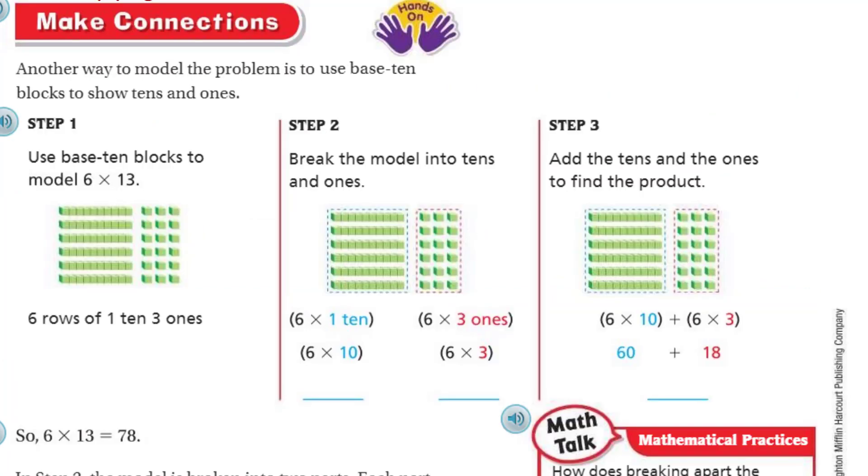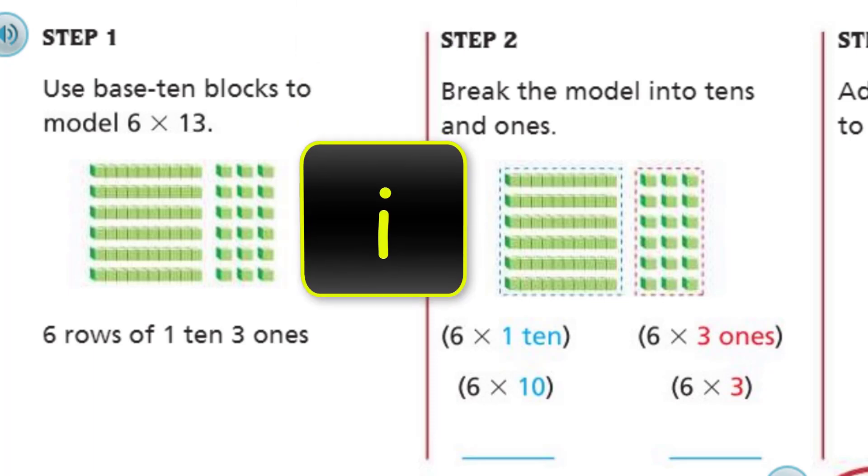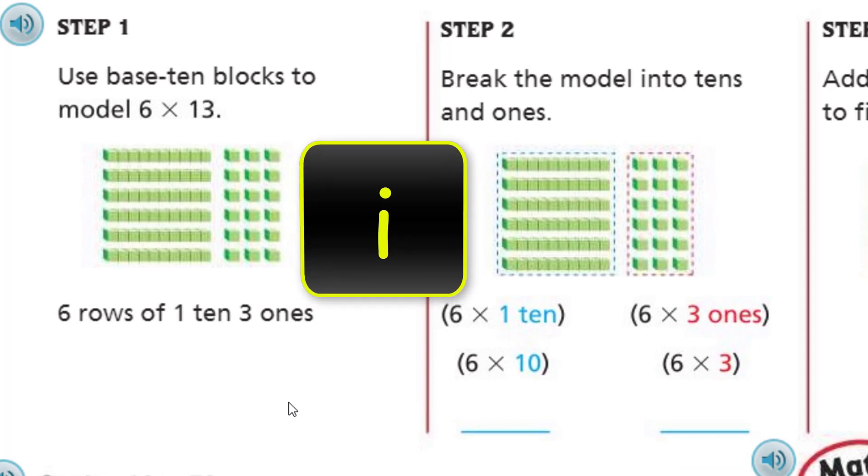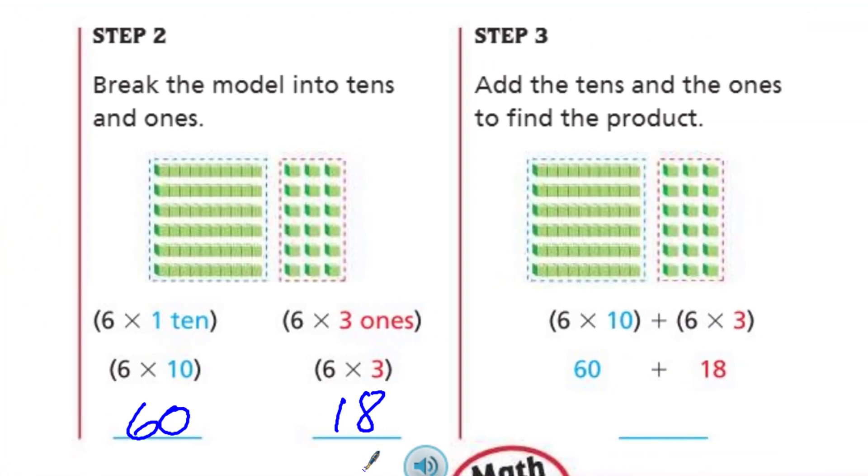Now it says we're going to make connections. There's another hands-on so you can get out your base 10 blocks. It says another way to model the problem is to use base 10 blocks to show 10s and 1s. Step 1, use base 10 blocks to model 6 times 13. And you can see we have 6 groups of 13. 6 rows of 1 ten and 3 ones. You see that? So 6 rows of 1 ten and 3 ones. You can see there's 6 rows, 1, 2, 3, 4, 5, 6 of 13. Step 2 says break the model into 10s and 1s. Here it's showing you 6 times 1 ten. And so then that would be 6 times 10, which here we have 60. Here we have 6 groups of 3 ones or simply 6 times 3, which is 18. Step 3 says add the 10s and the 1s to find the product. So we're going to be adding those two numbers together. Well, 60 plus 18, here it is, is 78, which is the answer that we were hoping to get. So 6 times 13 equals 78.